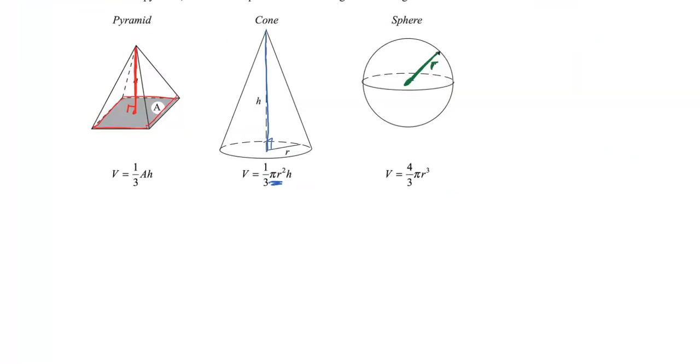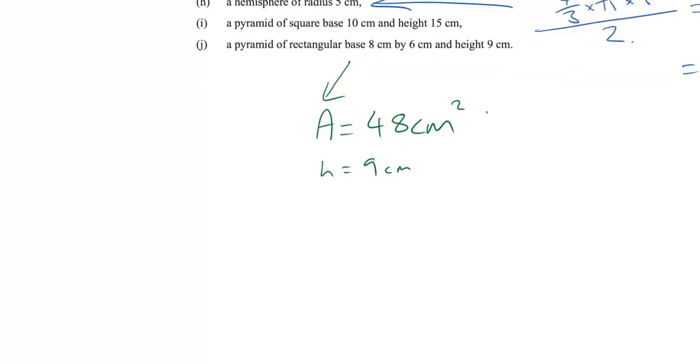So let's go back to our formula. It's a third times A times h. So it's got to be a third times 48 times 9. And if we work that one out, we're going to get 144 centimeters cubed.